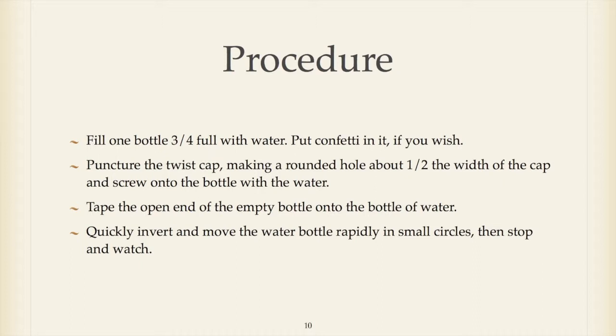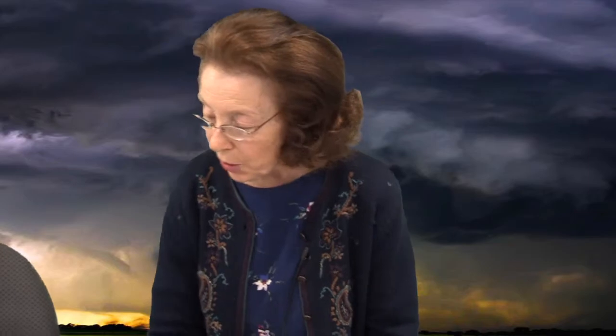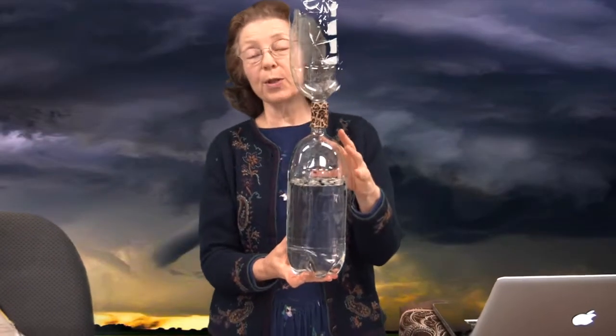Slide 10 tells you the procedures. You take the cap of one of the bottles and drill a hole about a half to three-quarters inch in diameter across the cap so that the water can flow through. Then you put the empty bottle on top. Here is our demonstration — two plastic bottles, one bottle three-fourths full. I put some confetti in it so it might help you see the whirling better.